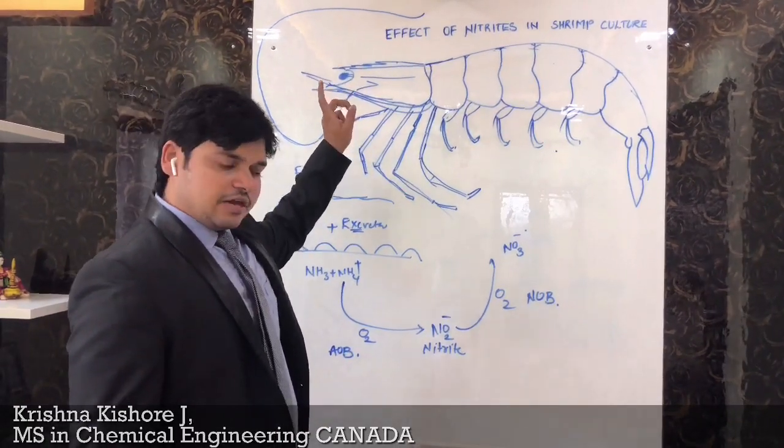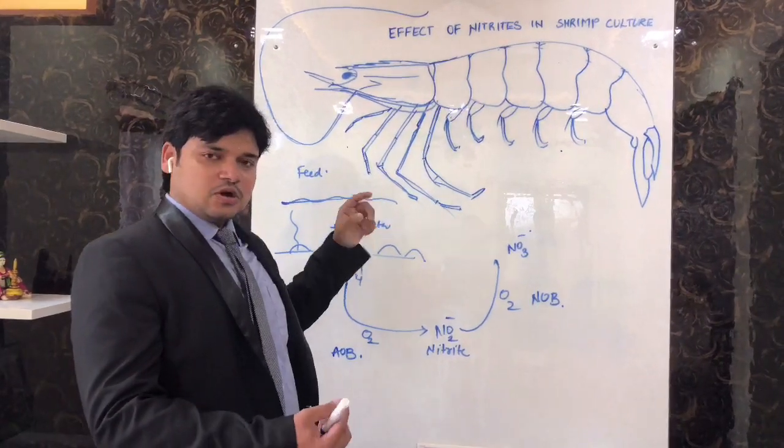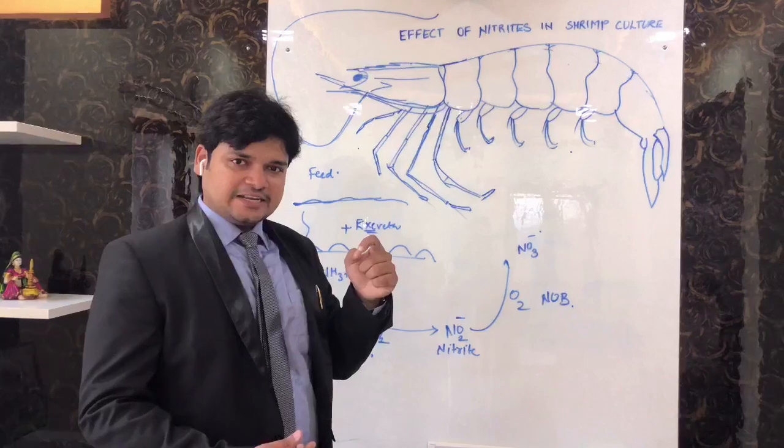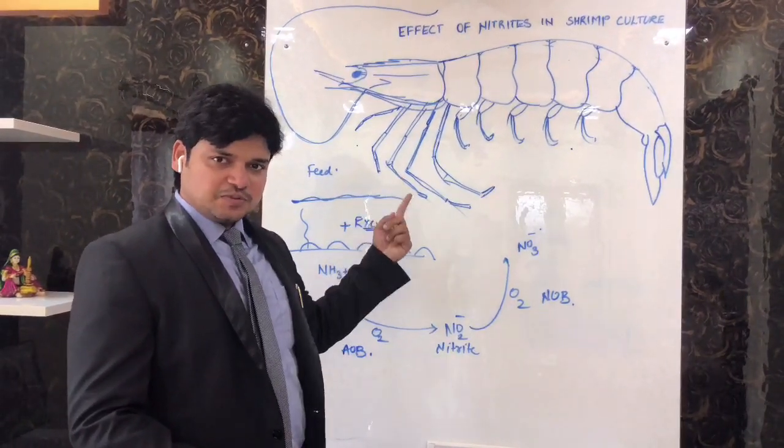It enters into the blood. When we are talking about the shrimp, the blood is copper hemocyanin, so the nitrites oxidizes the copper molecule in the shrimp and it gives a great toxic effect.